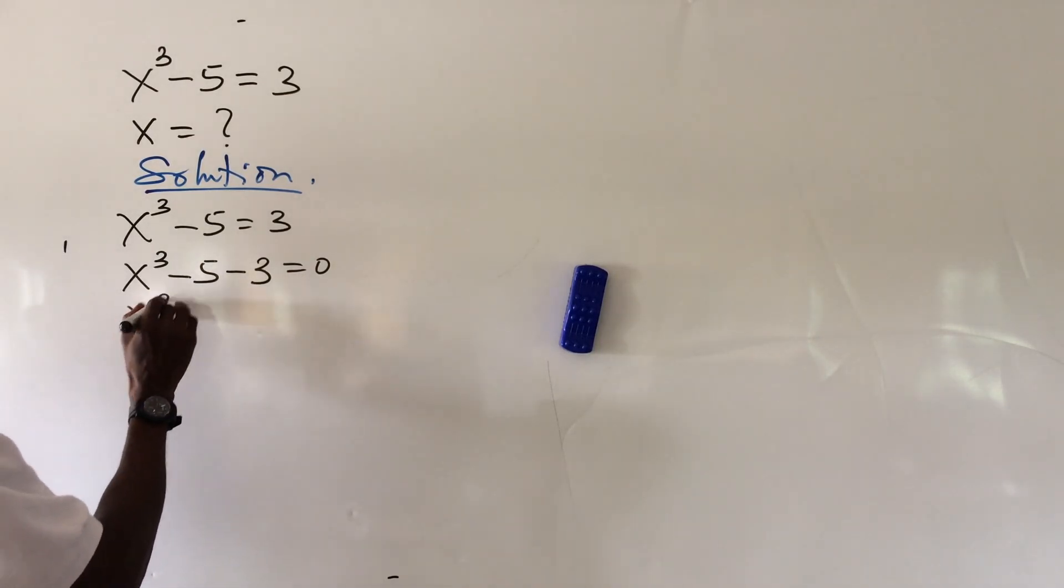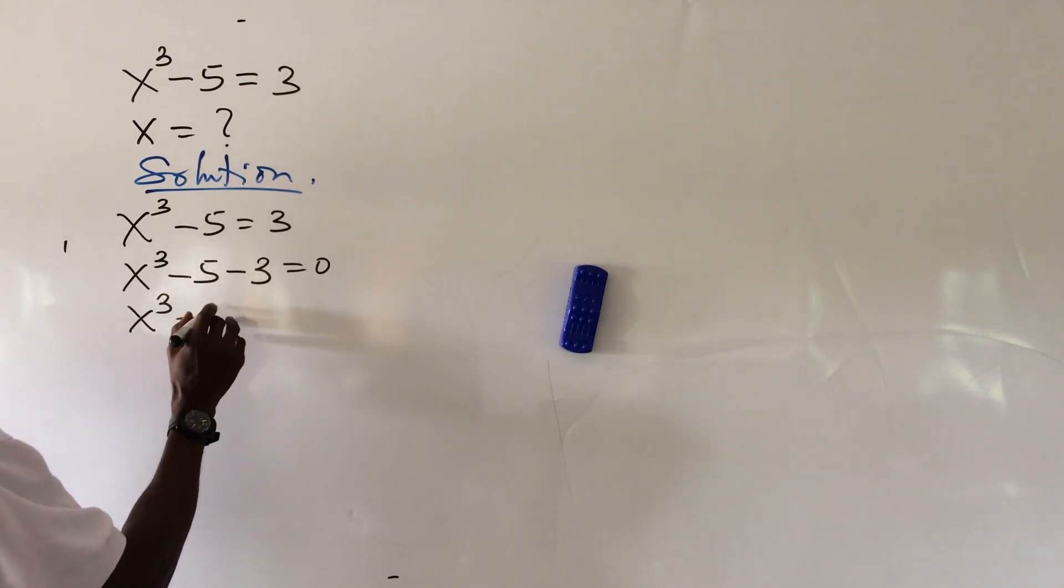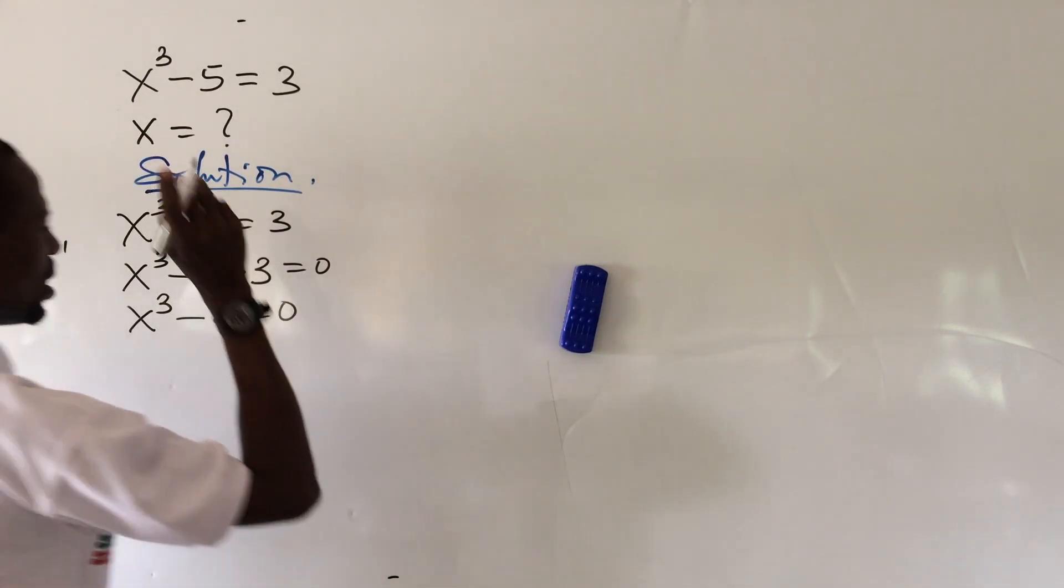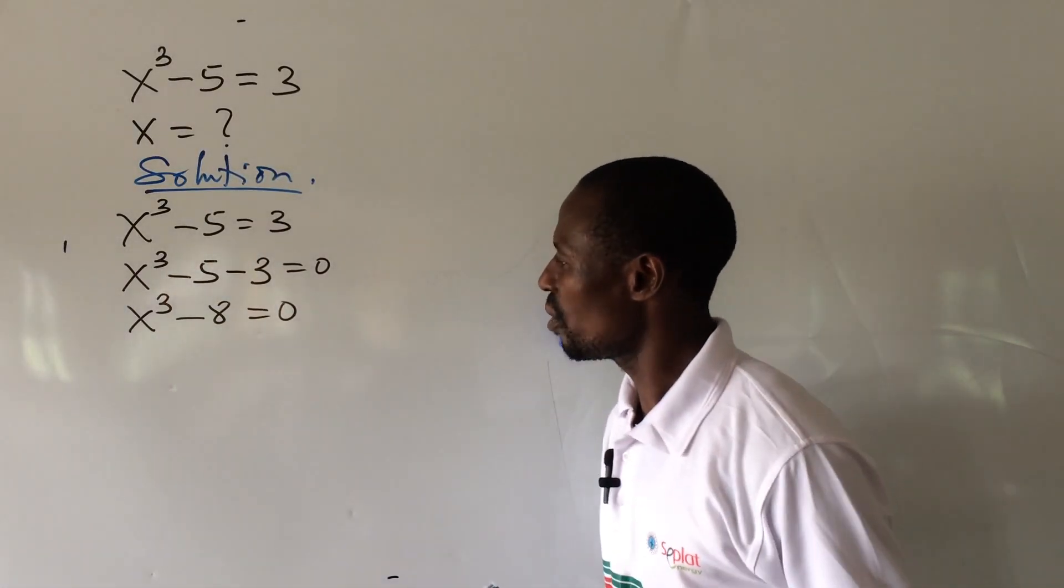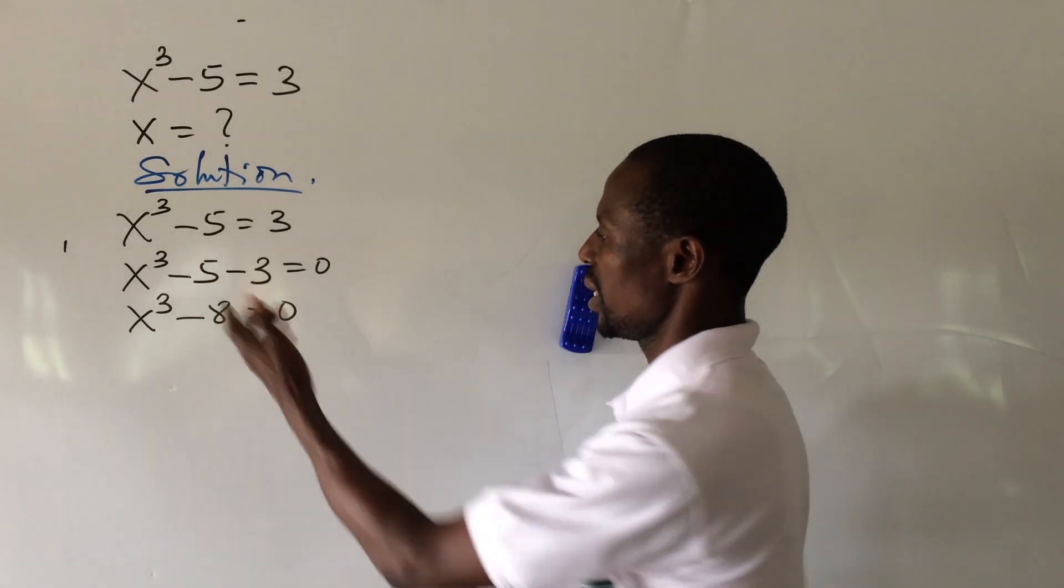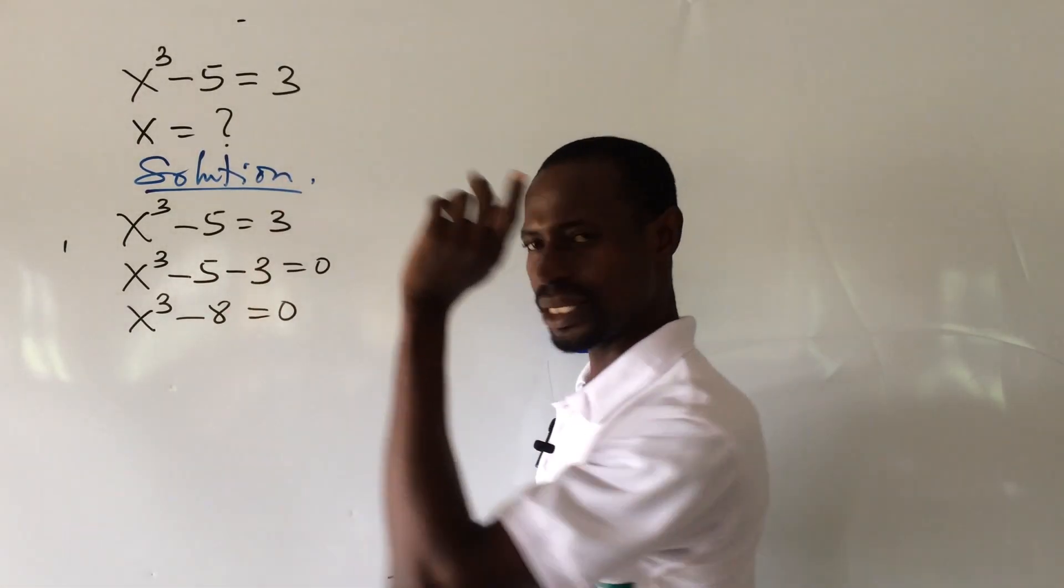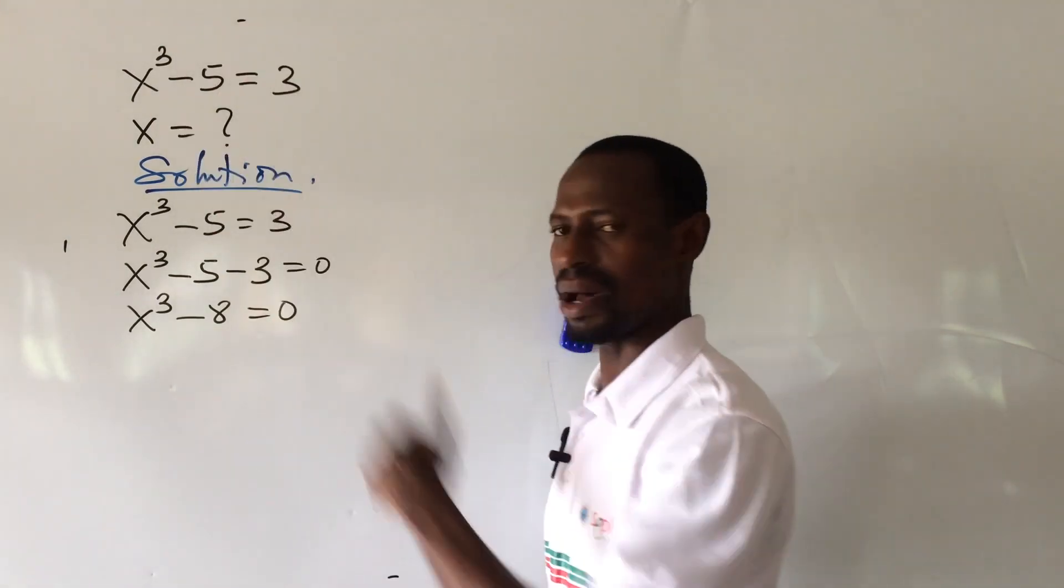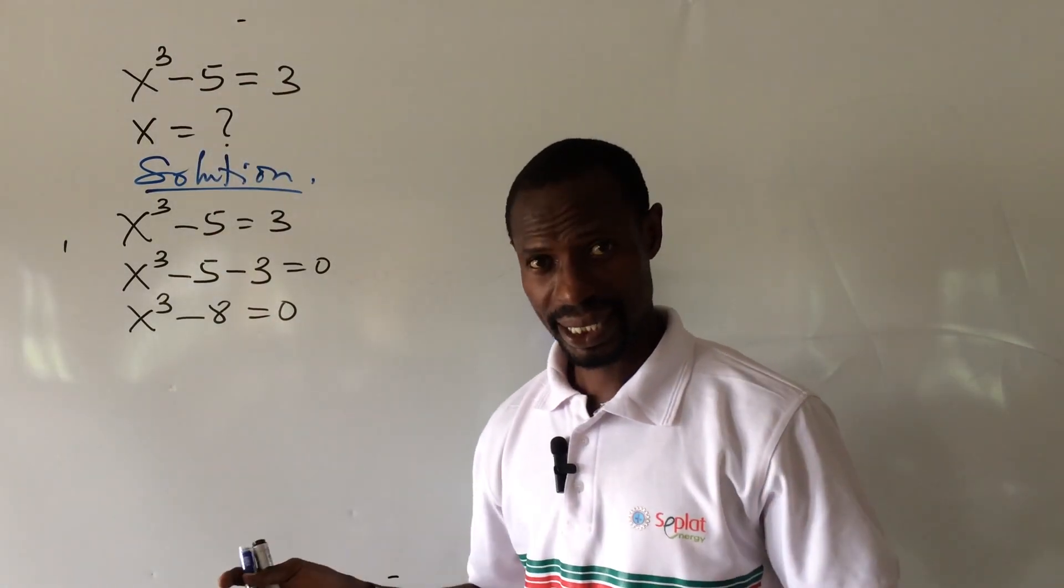Minus 5 minus 3 will give us minus 8, so automatically we have x to the power of 3 minus 8 equal to 0. Now we are having x to the power of 3, so what should come to our mind is, can you put in a particular number or figure here, raise it to power 3 to give us 8?